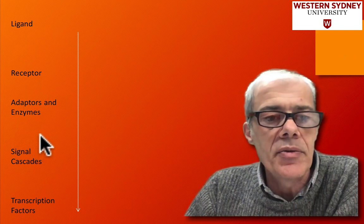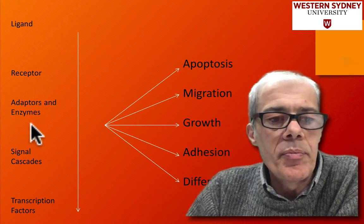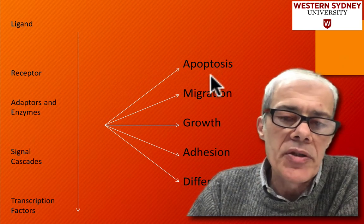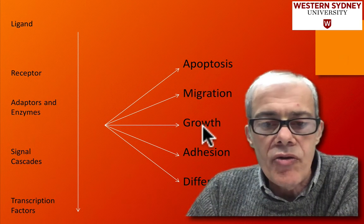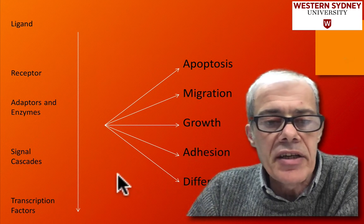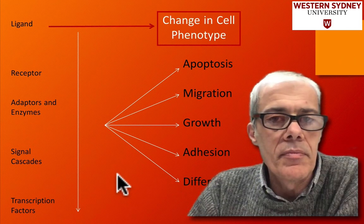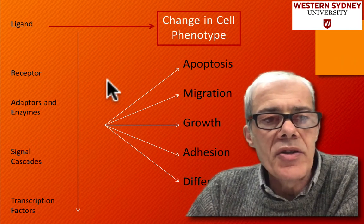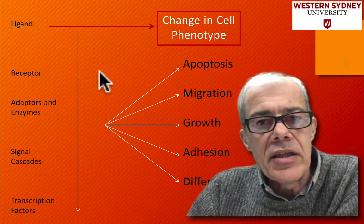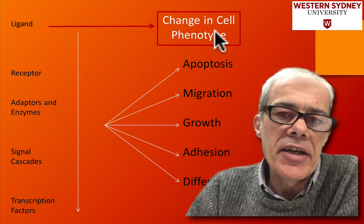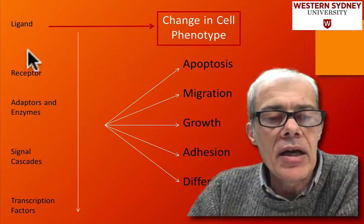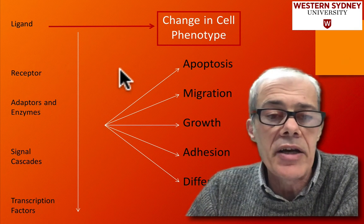We're trying to put RAS into context. The effect of this normal signaling is to drive processes such as apoptosis, cell migration, cell growth, cell adhesion, and cells differentiating into different cell types. We have a situation where a very small amount of growth factor leads to these large-scale changes in cell phenotype. The question is, what are the signaling pathways that cause these large-scale changes?